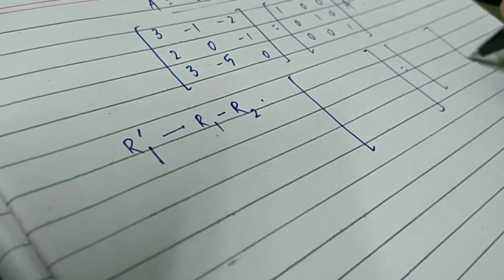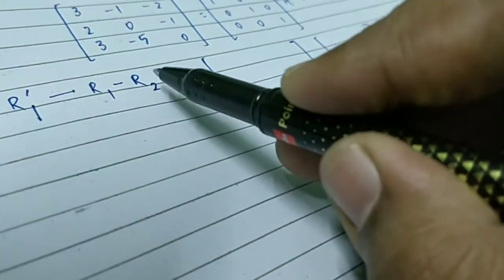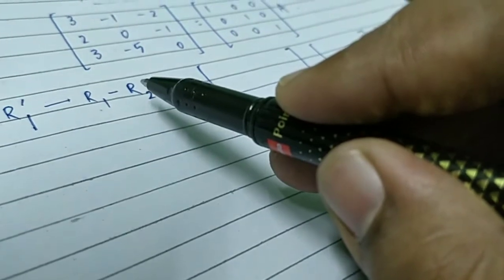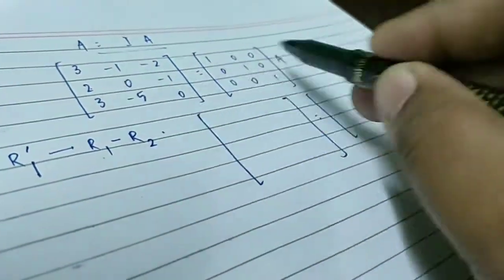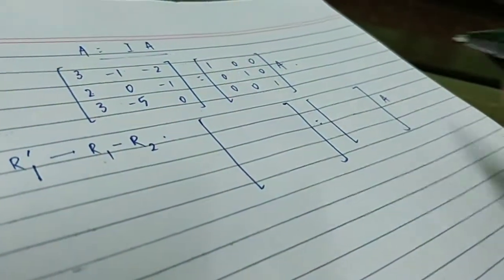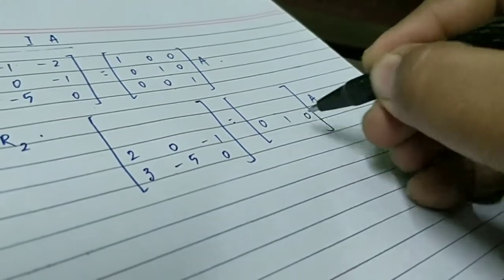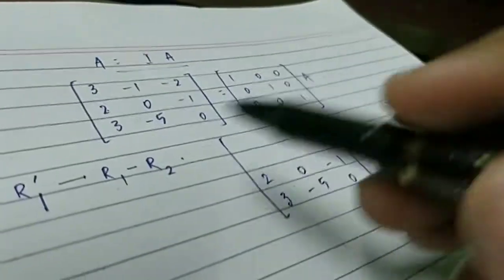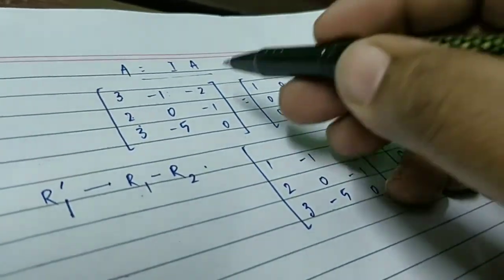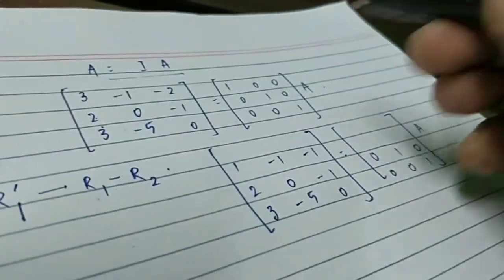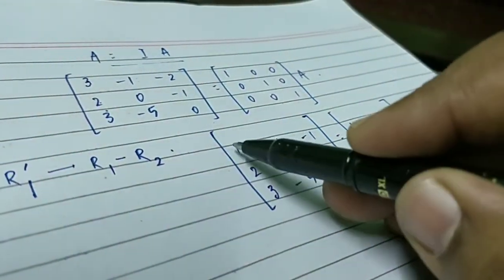Performing R1 = R1 minus R2: 3 minus 2 gives 1; minus 1 minus 0 gives minus 1; minus 2 minus (minus 1) gives minus 1. For the identity side: 1 minus 0 is 1; 0 minus 1 is minus 1; 0 minus 0 is 0. First operation is done and we have made the first element as 1. Now the task is to make the elements in rows 2 and 3 of the first column equal to 0.